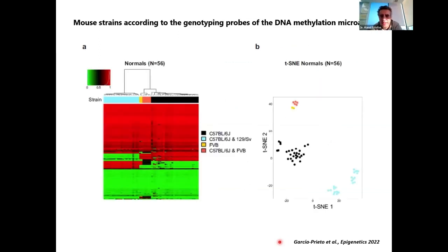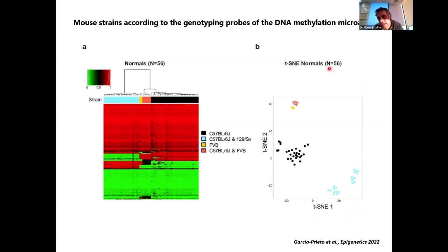It was very smart to also introduce probes in the array to separate different mouse genotypes, because this is a problem in many labs worldwide, in pharma, and even in mouse production facilities that struggle with genotyping. This genotyping capability is able to discriminate four different mouse strains very well, as you can see in distinct clusters in both heatmap and TSNE representations.